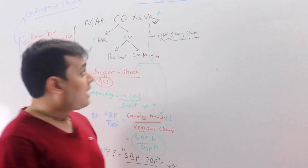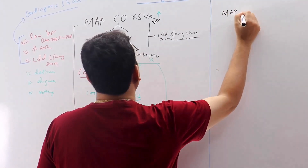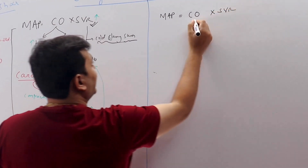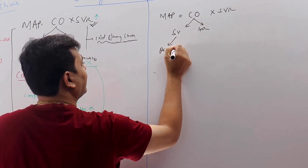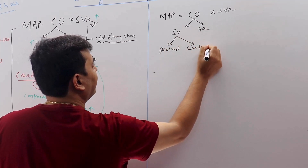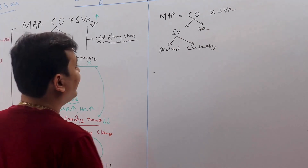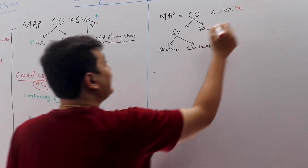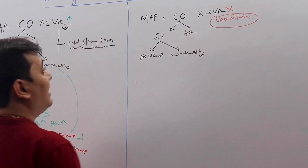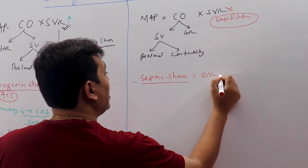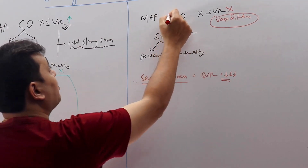Now for septic shock. Again, mean arterial pressure equals cardiac output multiplied by SVR. The primary pathology of septic shock is in the SVR — there is widespread vasodilation, so SVR is very, very low from the start.